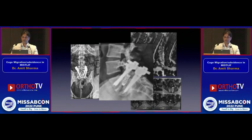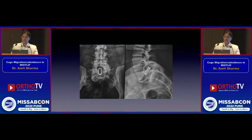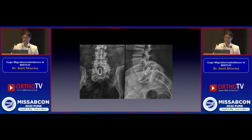This time we did not go for another MIS procedure; we used an open midline approach. The plan was to remove both screws and, if possible, remove the cage and proceed with re-fusion. However, the cage was significantly indenting the dura, and we were unable to remove it.